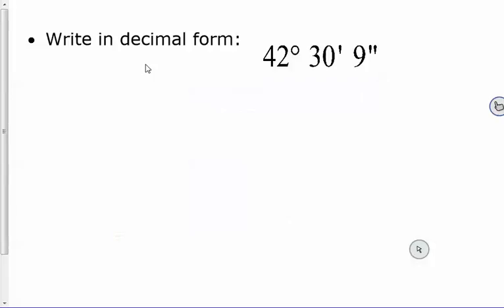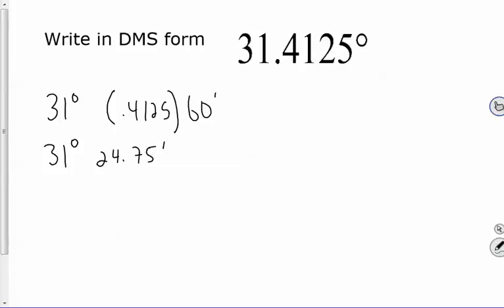Here's another one. If you want to write this in degree minute second form, this gets kind of crazy. So what you have to do here, alright, so you got 31.4125 degrees. So what I want to do is I'm basically going to take, and I know it's definitely 31 degrees, and then what I'm going to do is I'm going to take the 0.4125 and what I'm going to do is I'm going to times that by 60 for the 60 seconds, right? So then I get 31 degrees, 24.75 minutes.